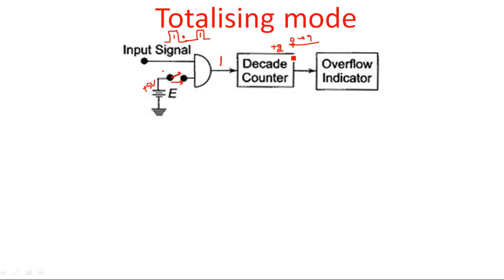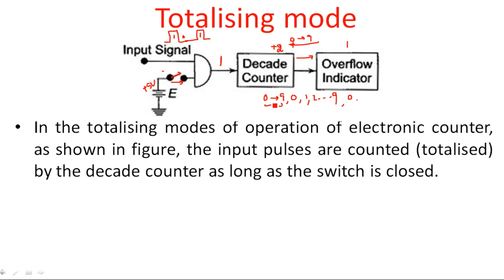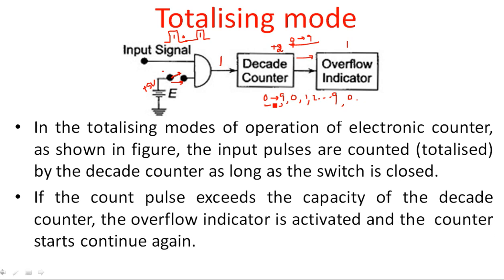When the decade counter meets 10 pulses, it gives an overflow — the overflow becomes 1. Once the overflow occurs, it counts the next pulses again from 0, and so on up to 9, then starts from 0 again. For every 10 pulses, the counter produces one overflow. In totalizing mode, the input pulses are counted by the decade counter as long as the switch is closed. If the count exceeds the capacity of the decade counter, the overflow indicator is activated and the counter starts counting again.